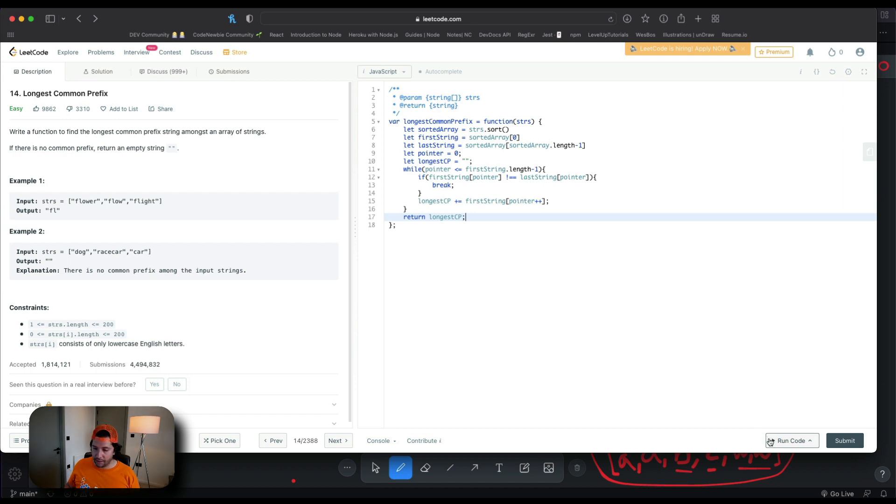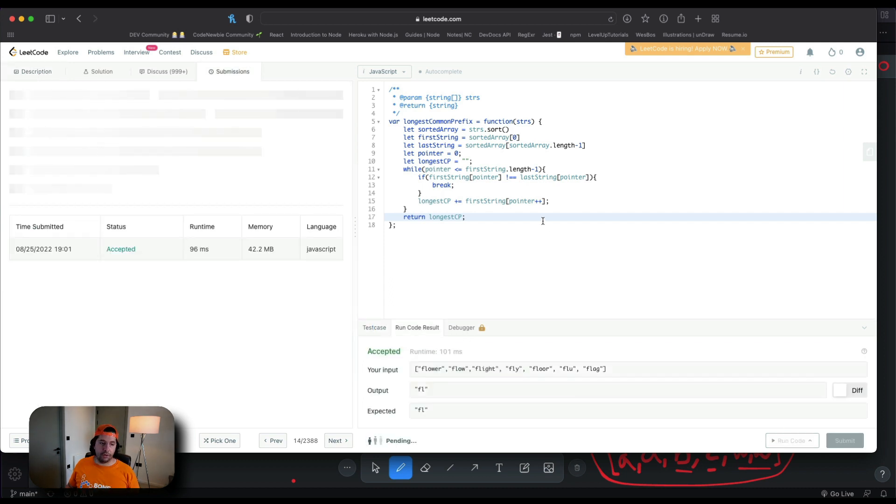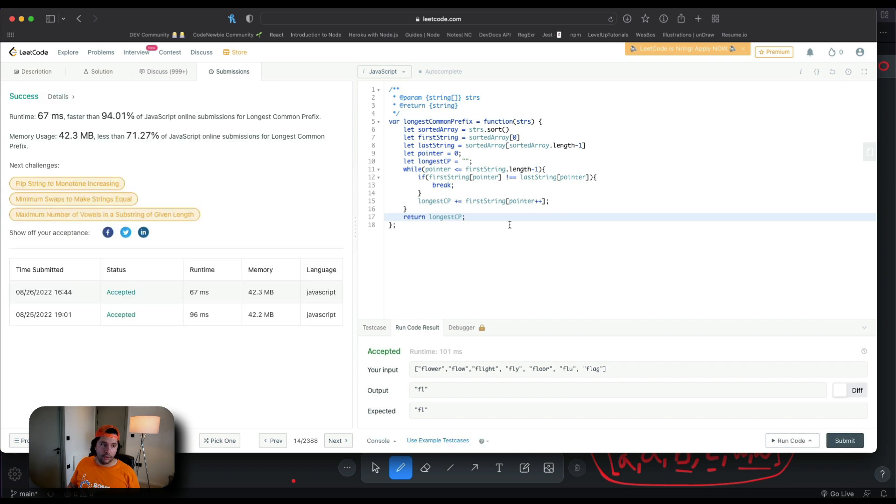That's all I think, let's run the code. So, we pass that test case. I have added a few more things. Probably you will just have flower, flow and flight. If I submit this code... All good! 67 milliseconds faster than 94% of JavaScript. I'm happy with that. Hopefully you are.